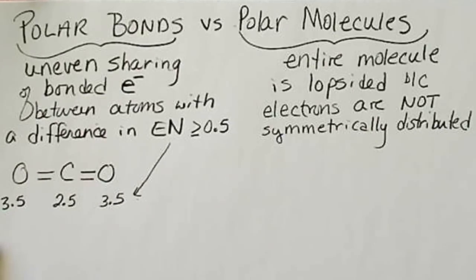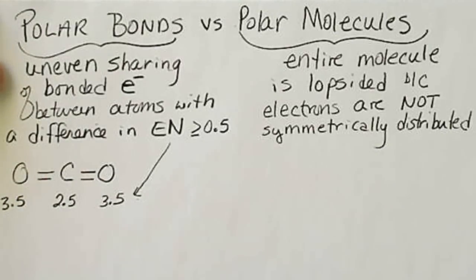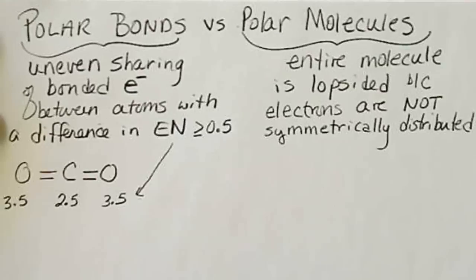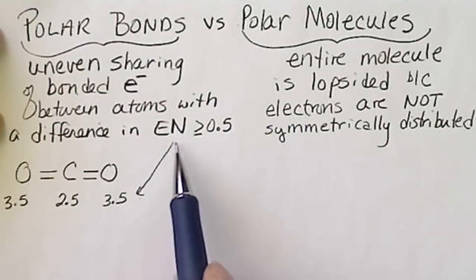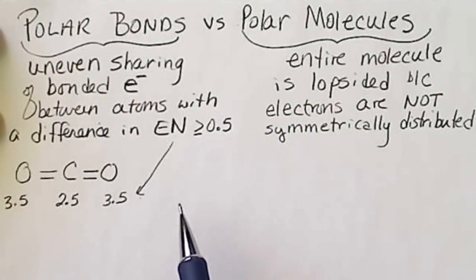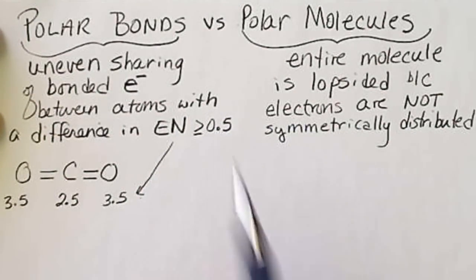In the last slide, we looked at what would constitute a polar bond, and that would be an uneven sharing of electrons between atoms. That would only occur if there was a difference in electronegativity values, and we have 0.5 as a cutoff value.